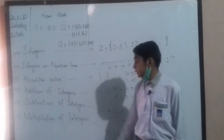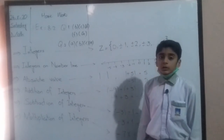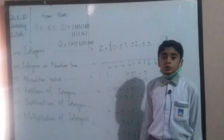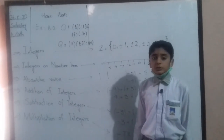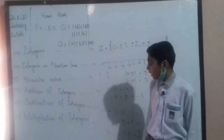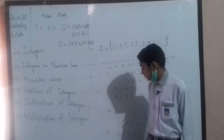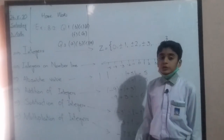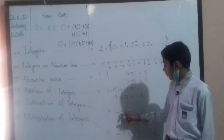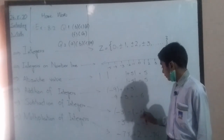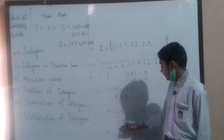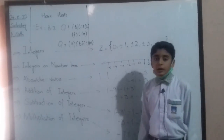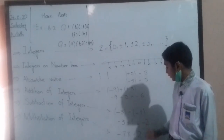Subtraction of integers. We use the sign of minus between two integers, which is called subtraction of integers. First of all, we solve the brackets. For example, -3 - (-1) equals -2.